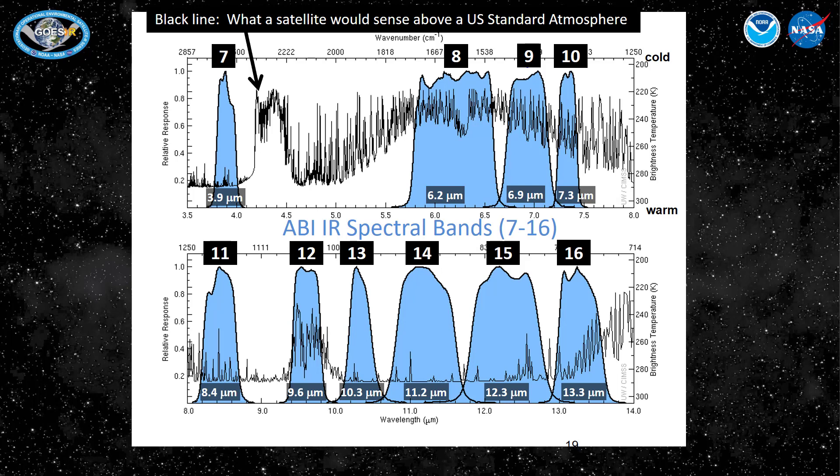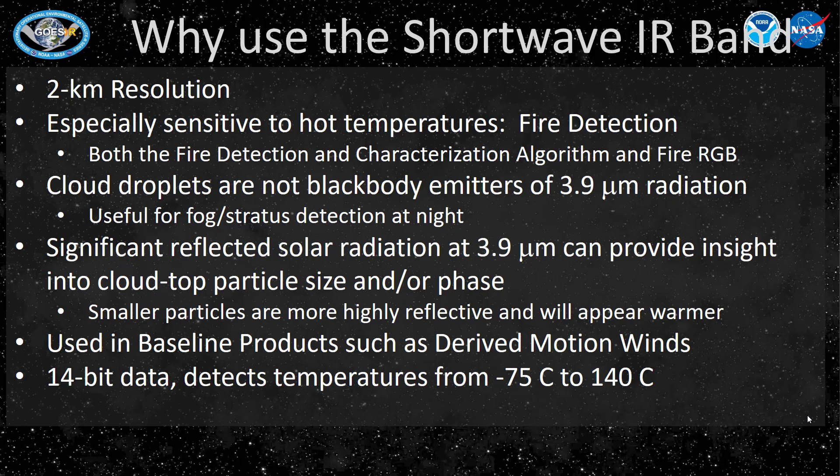Band 7 and 13 are window channels — that is to say there is relatively little absorption by gases in the atmosphere. So in a clear sky, the emitted amount of radiation is pretty much what you're seeing emitted from the surface of the Earth. In contrast, energy emitted at 6.2, 6.9, and 7.3 micrometers is absorbed by water vapor, then re-emitted from a higher, colder temperature. Band 7 at 3.9 micrometers is the shortwave infrared band. Like all infrared channels, it has 2 kilometer resolution, and it's especially useful for detecting low-level temperatures and especially fires.